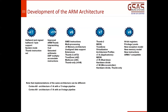After v6, which gave us the Cortex-M series, ARM v7 represents the current mainstream technology with Cortex-A, Cortex-R, and Cortex-M profiles. From v7 onward, ARM introduced a major breakthrough with distinct processor cores: V7A, V7R, and V7M.